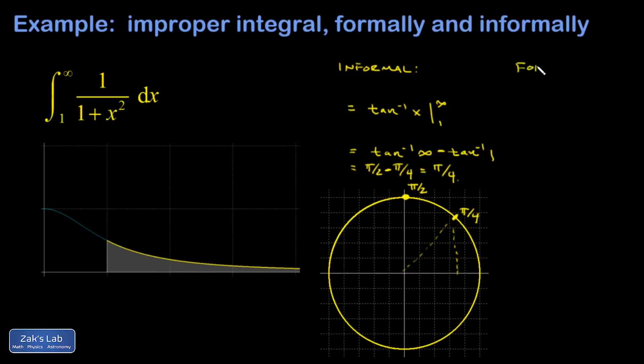What about the formal approach? The difference here is just that we have to treat infinity as a limit. I'm going to look at the integral this way: it's the limit as t goes to infinity of the integral from 1 to t of 1/(1+x²) dx. We're really just doing all the same stuff, it's just dressed up a little more formally.